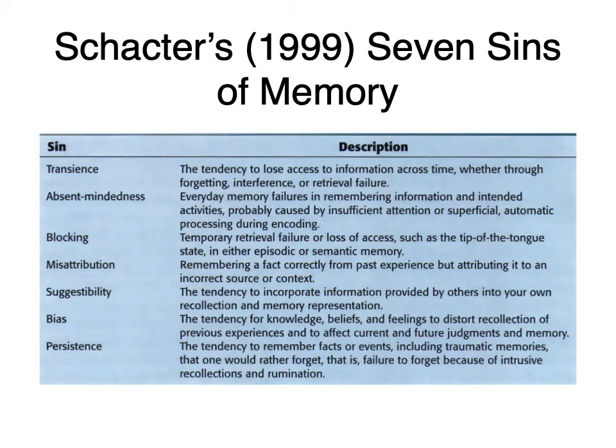The next three have to do with remembering things in the wrong way. Misattribution is remembering a fact correctly but attributing it to an incorrect source — you remember the information, but you don't remember who told it to you. It's a way in which we can easily be fooled.